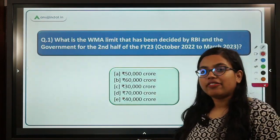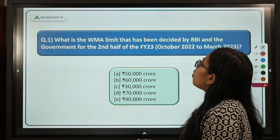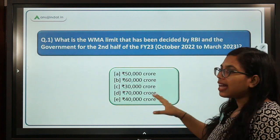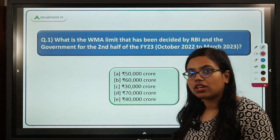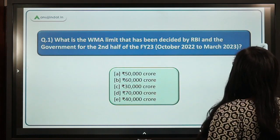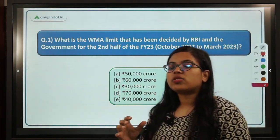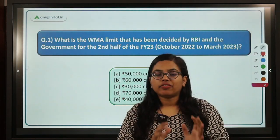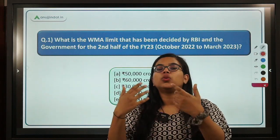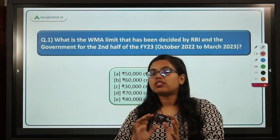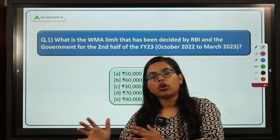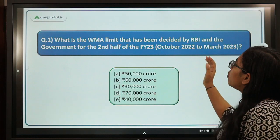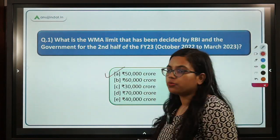Let's get started with the very first question: what is the WMA limit decided by RBI and the government for the second half of the financial year 2023? WMA is a special facility introduced by RBI, which provides short-term loans to the government — either the central government or state government. The limit decided by RBI for the government is 50,000 crore rupees.